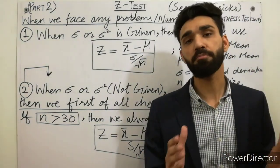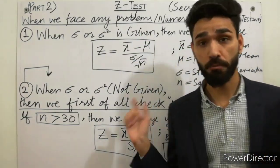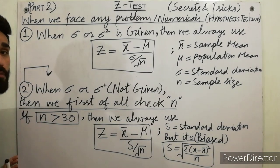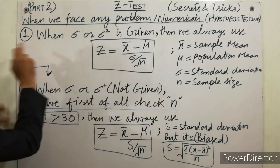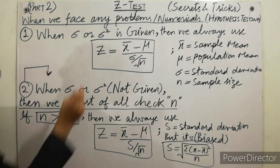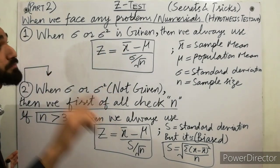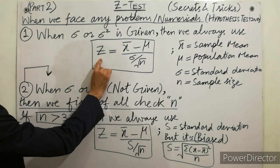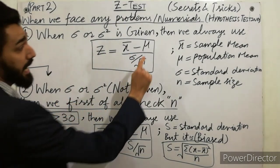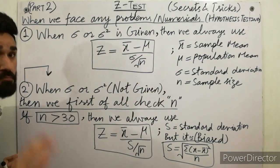All numerical problems of hypothesis testing about Z test will become very easy. Must remember: when we face any numerical problem of hypothesis testing, the first step — when sigma (standard deviation) or sigma squared (variance) is given in the problem, then we always use Z = (x̄ − μ) / (σ / √n). Here x̄ is the sample mean, μ is the population mean, σ is the standard deviation, and n is the sample size.